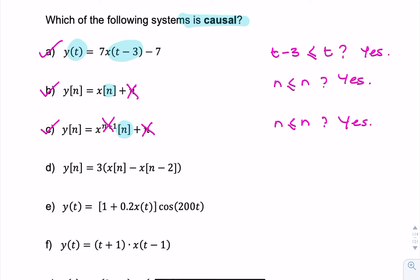Same again — we look at both n values and they both have to be less than or equal to n. So is n less than or equal to n, and is n minus 2 less than or equal to n? The answer is yes, so it's a causal system.